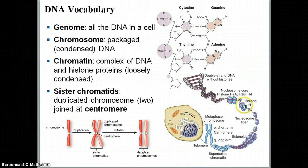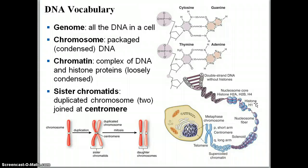Histone proteins are these little blue guys. Whenever DNA wraps around them, it's really helpful because it keeps the DNA from getting damaged or breaking. It's really important that it stays wrapped around those little histone proteins. A good way to think about it is like a spool of thread — the DNA would be the thread and histone protein would be the spool — that way your thread doesn't get all tangled, doesn't get damaged, and stays nicely organized.